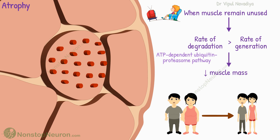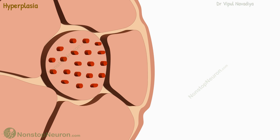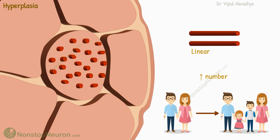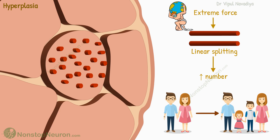Next, hyperplasia — it refers to an increase in the number of muscle fibers; it's like they are expanding their family by having kids. This increase is achieved through the linear splitting of previously enlarged muscle fibers. It occurs when extreme force generation is required. However, the increase in the number of muscle fibers is minimal and occurs only up to a few percent.